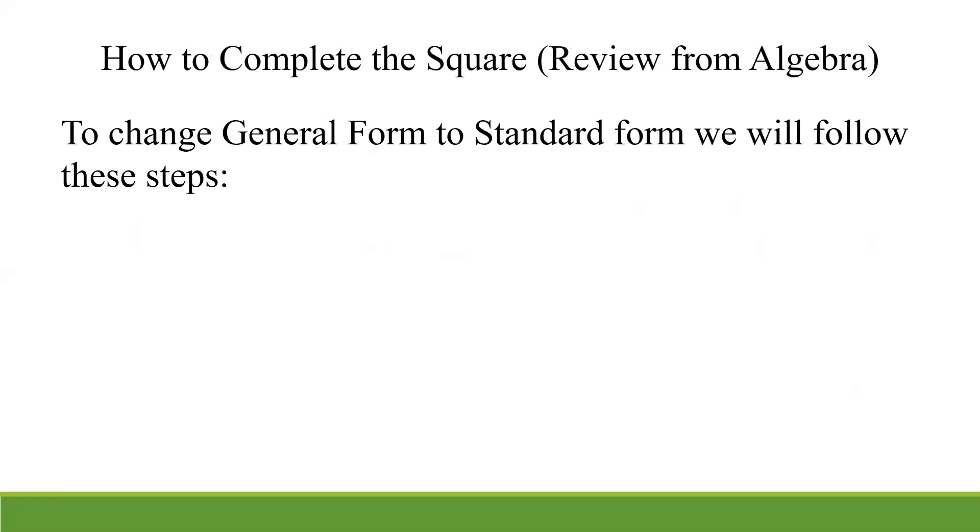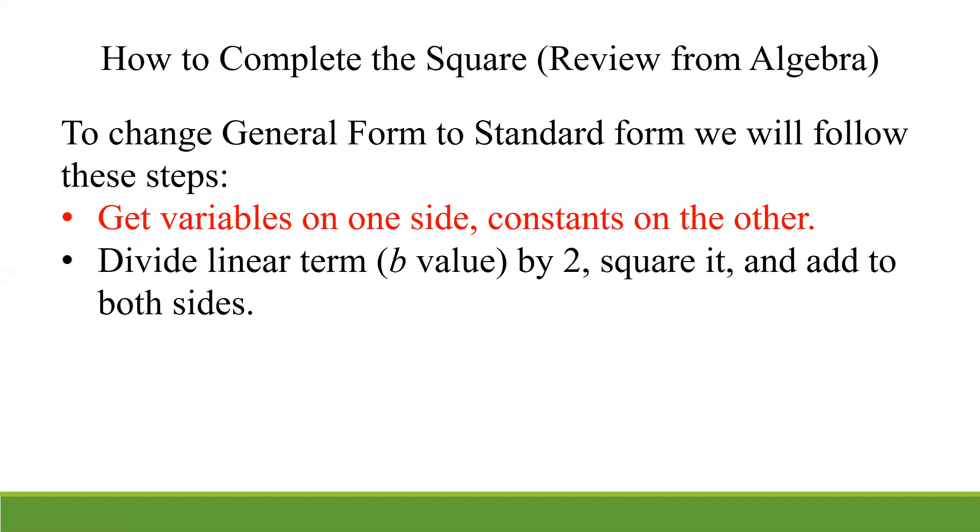So how do we complete the square? And again, this is right from algebra. Let's talk about the different steps. Generally speaking, we're going to get the variables on one side and the constants on the other. We're going to divide what we call the linear term, what you might have called the b value back in algebra 2, we're going to divide that by 2, square it, and add it to both sides. We're going to factor that left-hand side with the variables, and it's important that you see it's always going to be in the form of a perfect square. So x plus or minus that b over 2 value that you just found in the previous step, and then the whole thing squared.